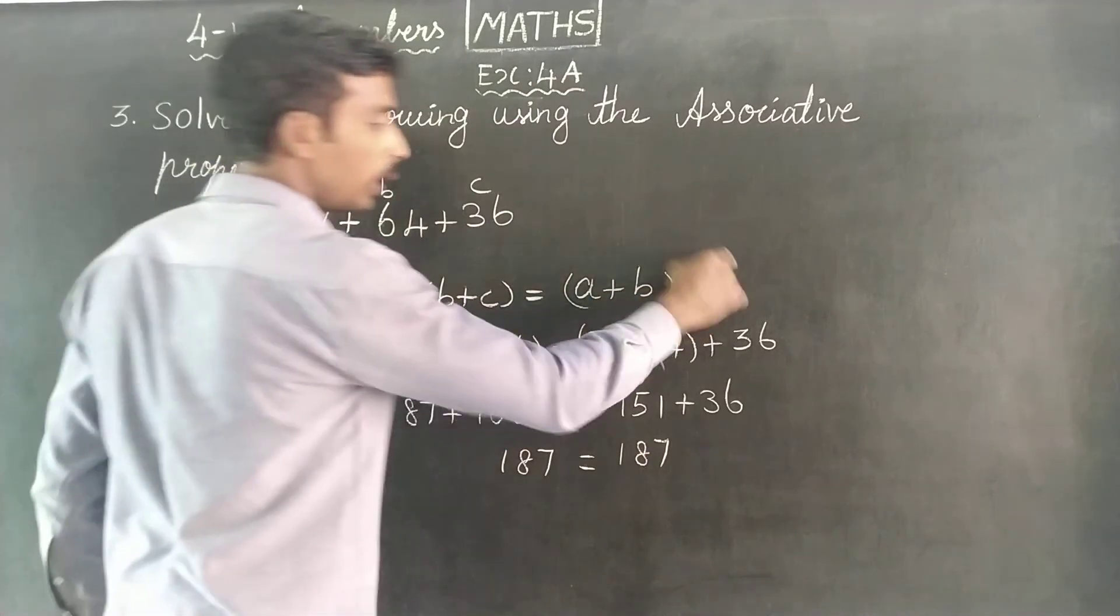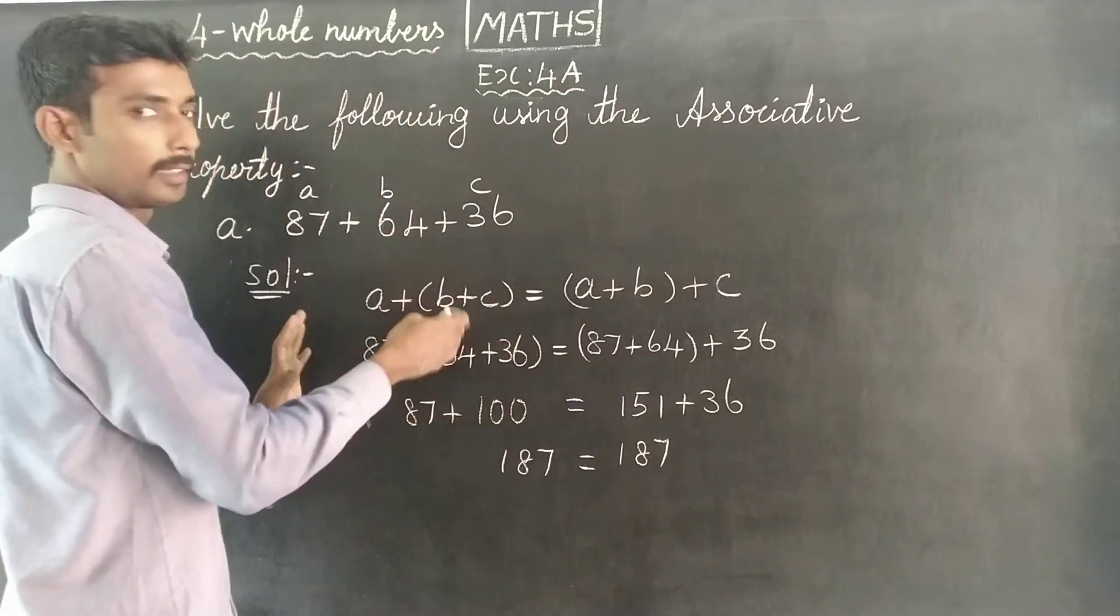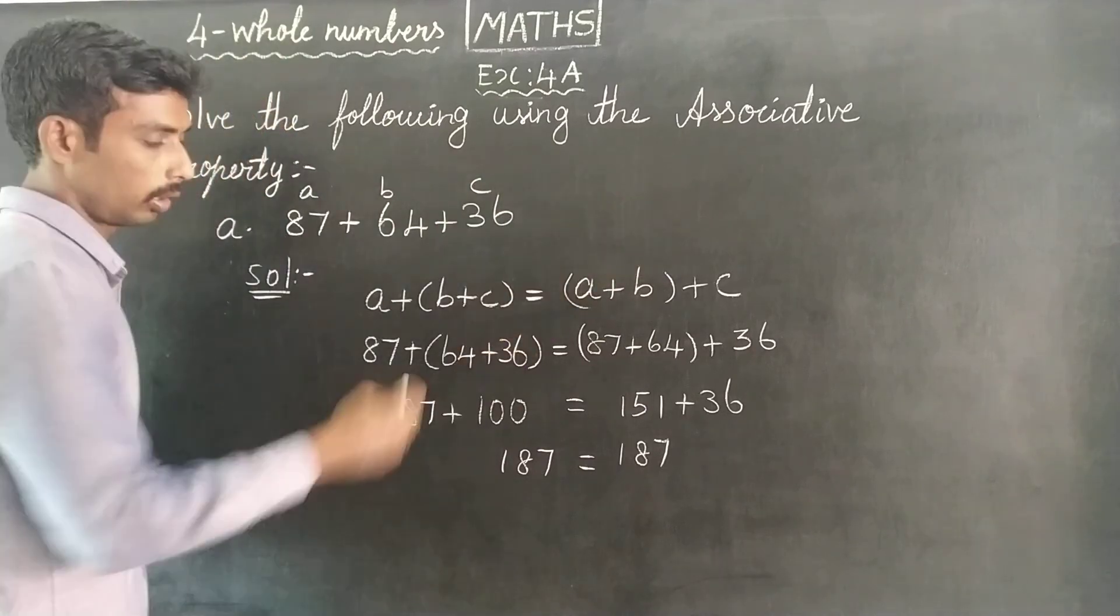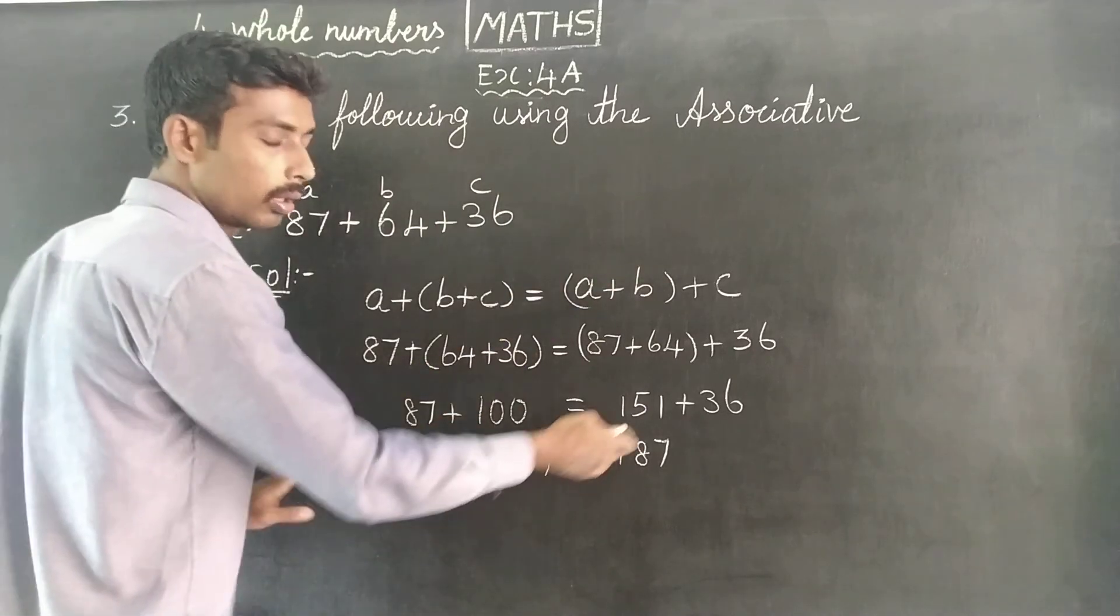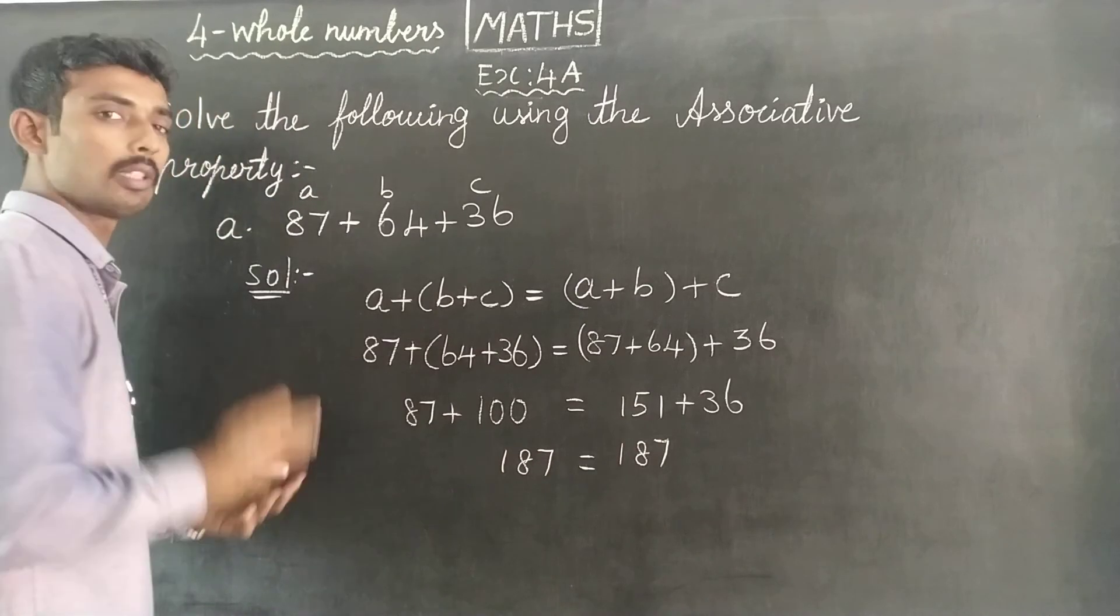This is 187. So your value, LHS equals, so 187 equals 187 in the same position.